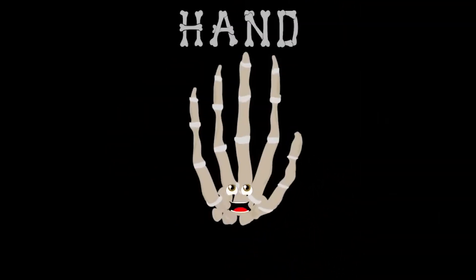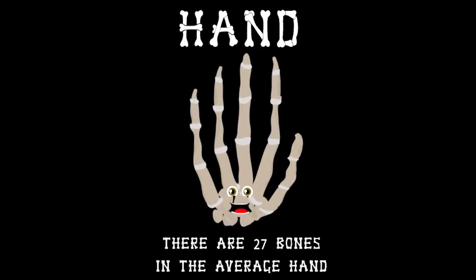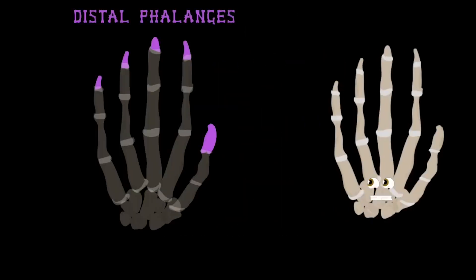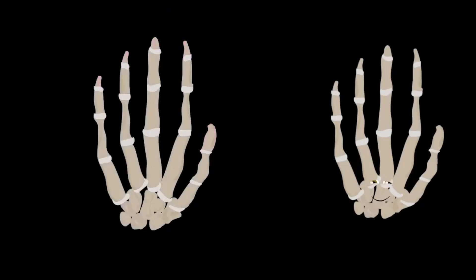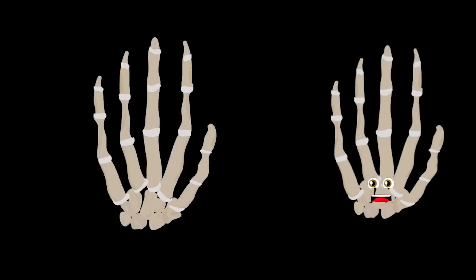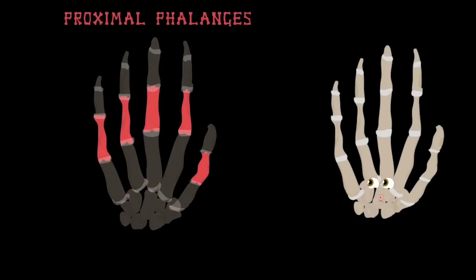How about I lend you a hand and tell you about me? There are 27 bones in the average hand. Let's start with the tips of my fingers and you'll see. There are 5 on my hand called the distal phalanges. They are attached to the middle phalanges — there are only 4 of them on the fingers. The proximal phalanges are what you're looking at; there are 5 that end your fingers.